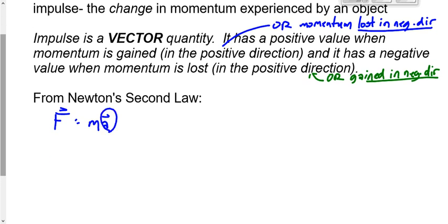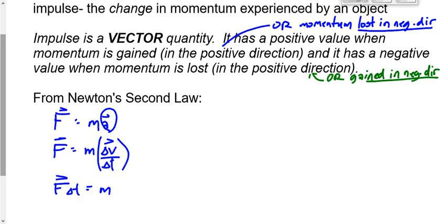I'm going to replace A with ΔV over ΔT, so the equation becomes F equals M times ΔV over ΔT. Is that legal? Yes — I just substituted an expression in for acceleration. If I had ΔV and ΔT I could have calculated A, but the expression is just as good. Now I'm going to rearrange by multiplying T across, and I get F times ΔT equals M times ΔV.